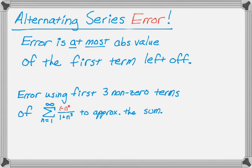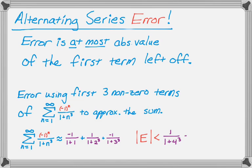So let's say we have this problem. We want the error using the first three non-zero terms of the sum from 1 to infinity of negative 1 to the n over 1 plus n cubed, and we want to use that to approximate the sum. So we get this thing is approximately equal to, so we plug in 1, then we plug in 2, and then we plug in 3. So the error, the absolute value of the error, is at most the first term left off, which means we plug in 4. So that would be 1 over 65 is the biggest the error could be.